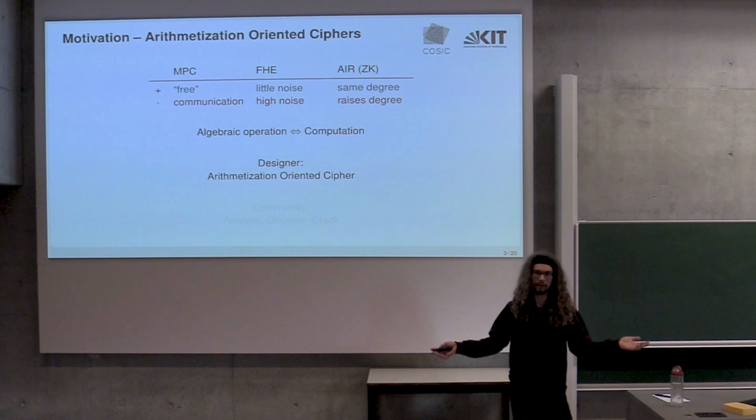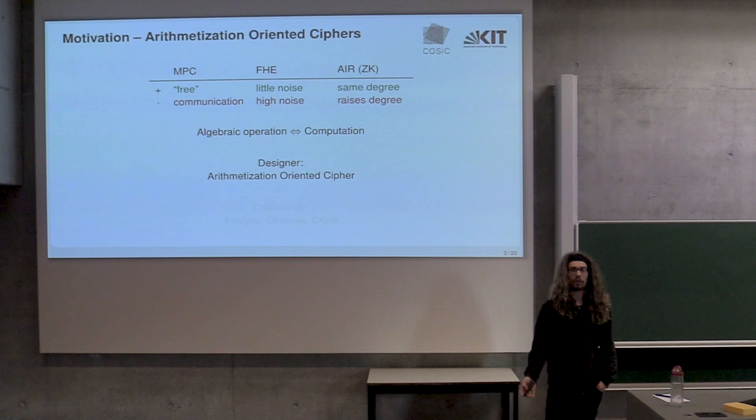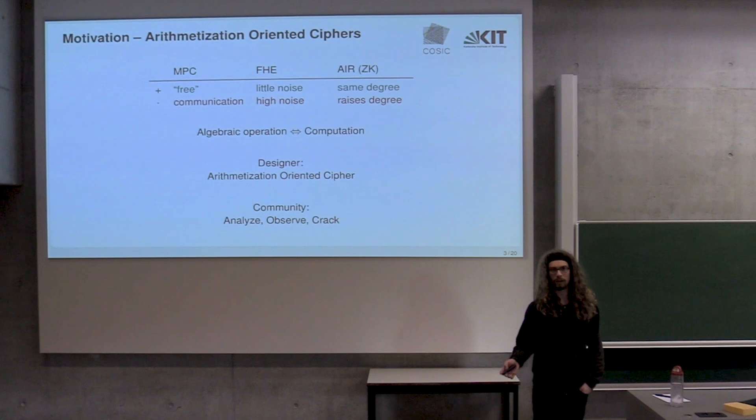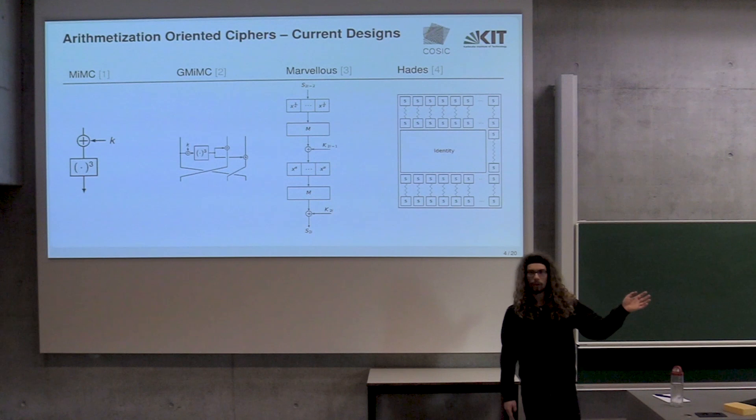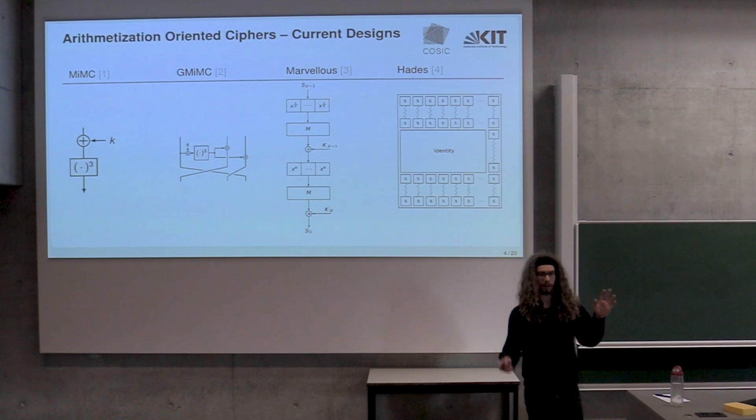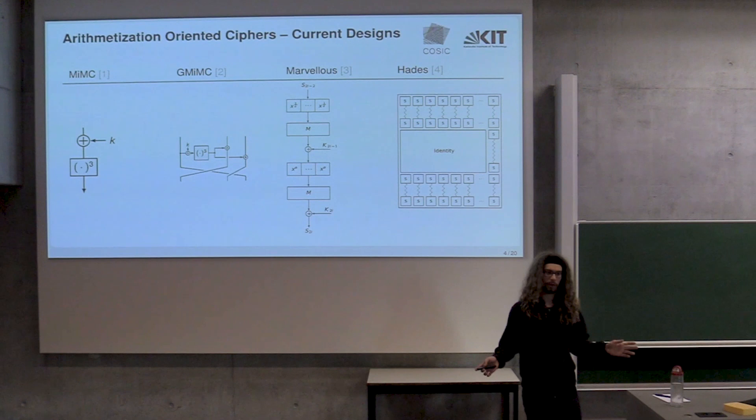Because they're so new, we don't fully understand them yet, or at least not to the degree where the community is comfortable using them. So we need to cryptanalyze them. This is part of this effort. Arithmetization-oriented ciphers have emerged in the last around five years. What they try to do is optimize for these metrics - minimize the amount of multiplications and still be secure.